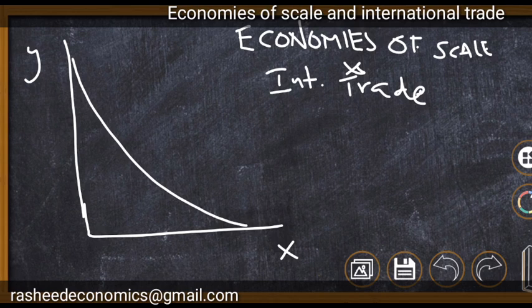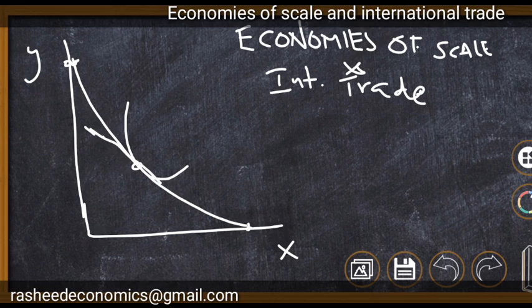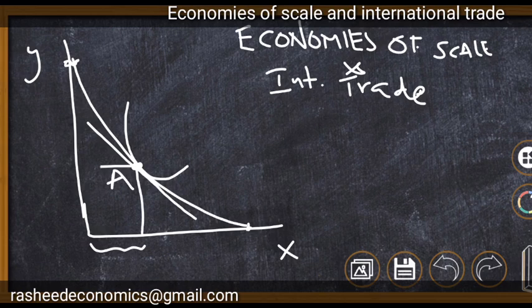With economies of scale, marginal opportunity cost goes on decreasing. This is the production possibility curve. With no trade, a country is producing and consuming at a particular point, say point A, where the community indifference curve is tangent. The price ratio of commodities can be represented as the tangency line drawn through this consumption point. Both nations are producing a particular quantity of X and Y and consuming the same amount.